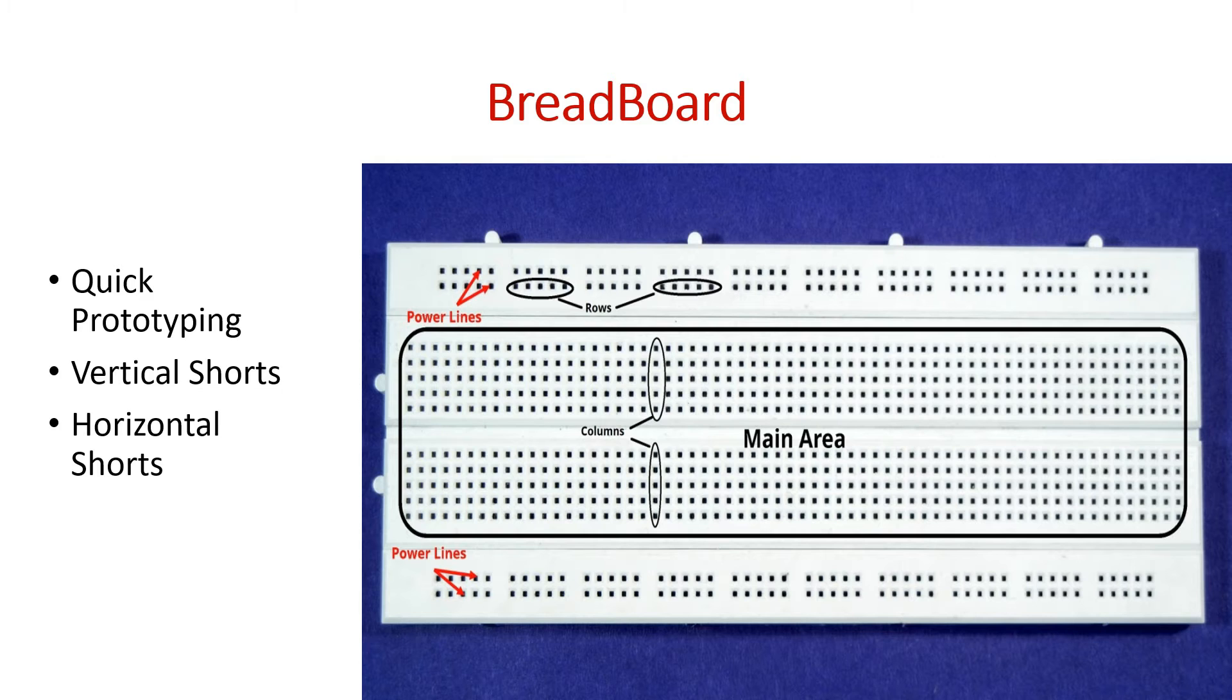Now let's see how the breadboard is arranged. Whatever number of holes you see in one line, one, two, three, four, five, all these vertical five holes are shorted with each other. What I mean to say is this point is electrically connected to the next point and next point and next point. All five points are electrically internally connected to each other, but this connection has nothing to do with the interconnections of these five holes and these five holes and the entire rest of the breadboard. Only these five holes are interconnected with each other.